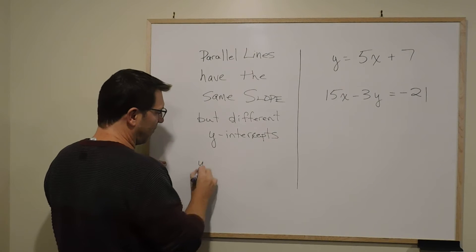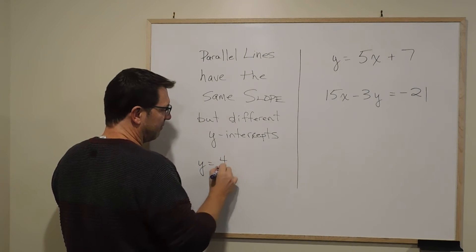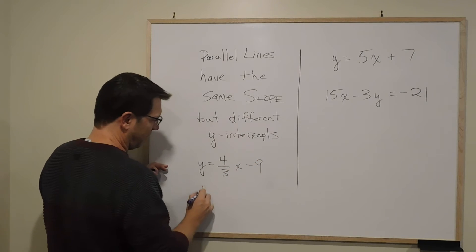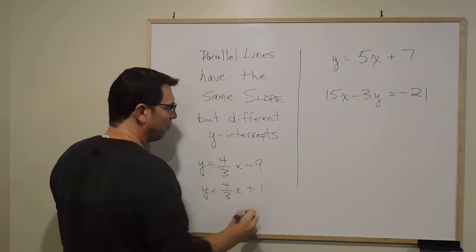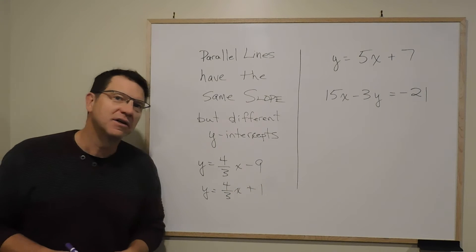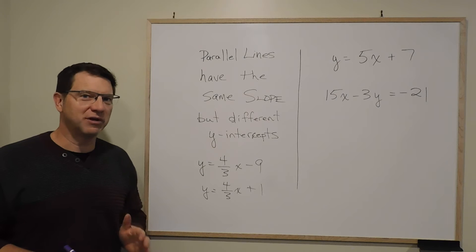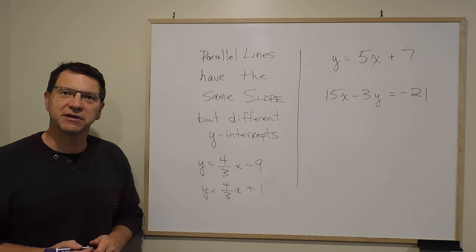For example, I have y = 4/3x - 9 and y = 4/3x + 1. They'll never cross because they have the exact same steepness, and you see it in the top picture and the middle picture here.